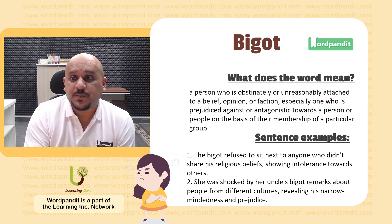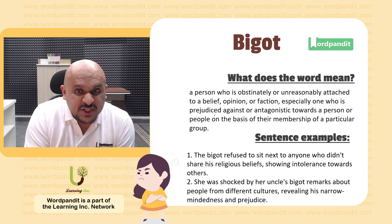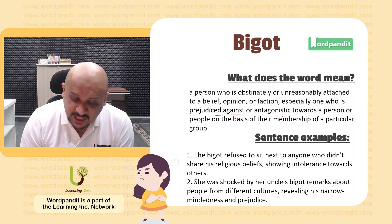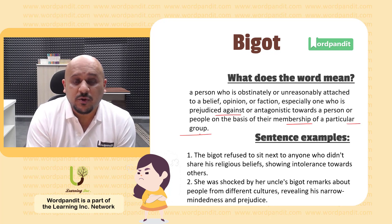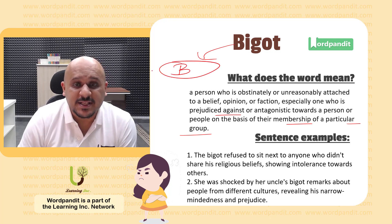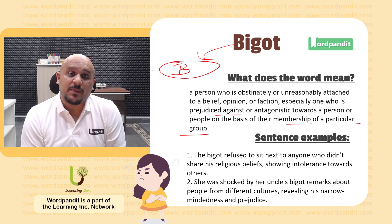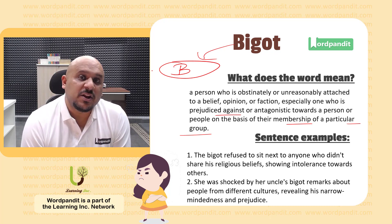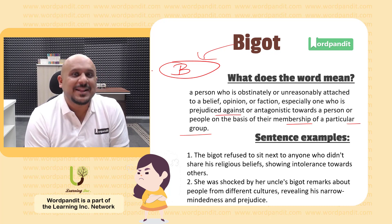Bigot refers to a person who is obstinately or unreasonably attached to beliefs, opinions, or factions. This is a person who is prejudiced against others. He has viewpoints which are anti-others on the basis of their membership of a particular group. Essentially, you remember the word bigot with another word starting with B — bias. This is a person who is biased against other people just on the basis of their affiliation to certain groups or the category that they belong to.